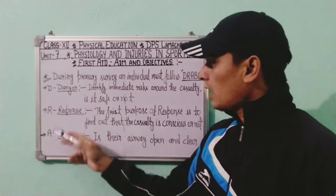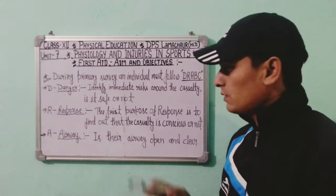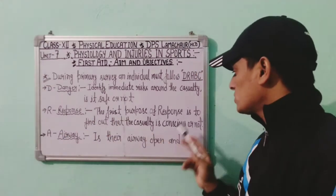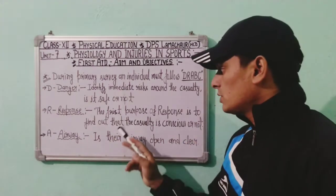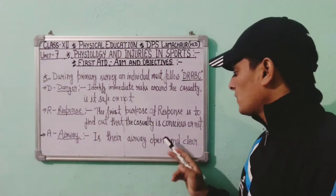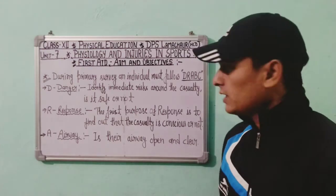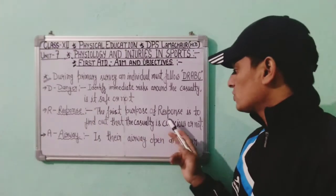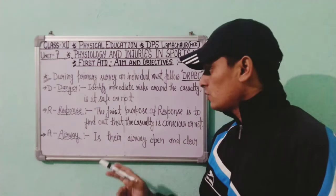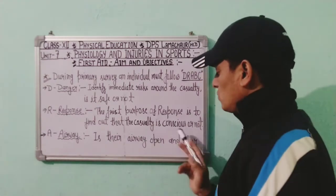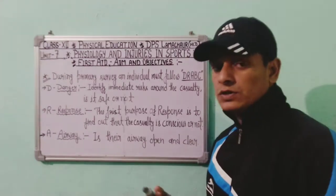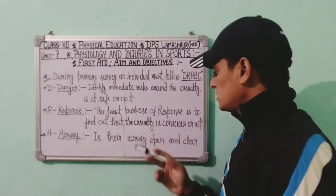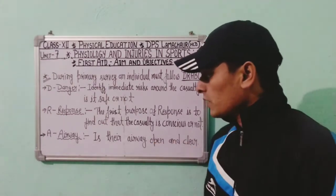The second letter is R, which stands for Response. The purpose of response is to find out whether the casualty is conscious or not. There are two conditions: conscious and unconscious. We must check whether the casualty is conscious or not.